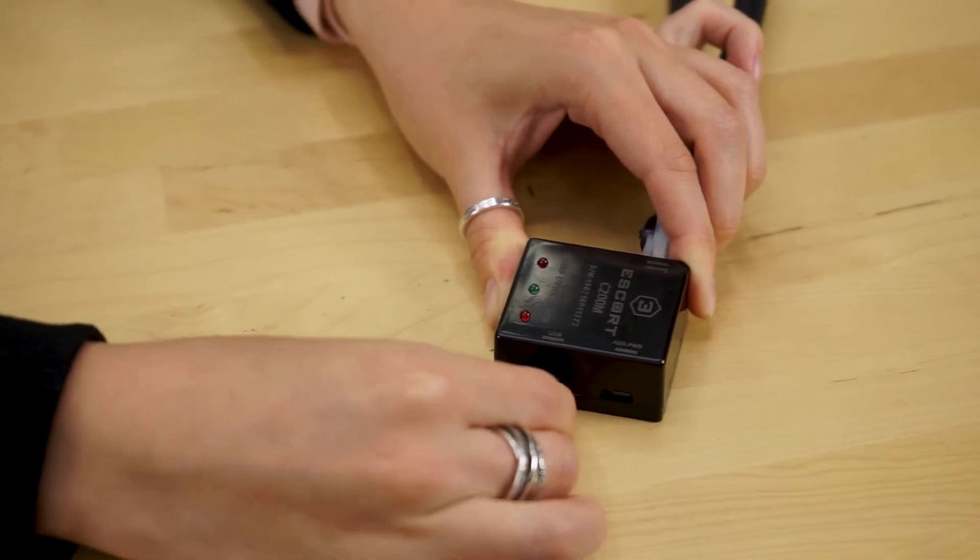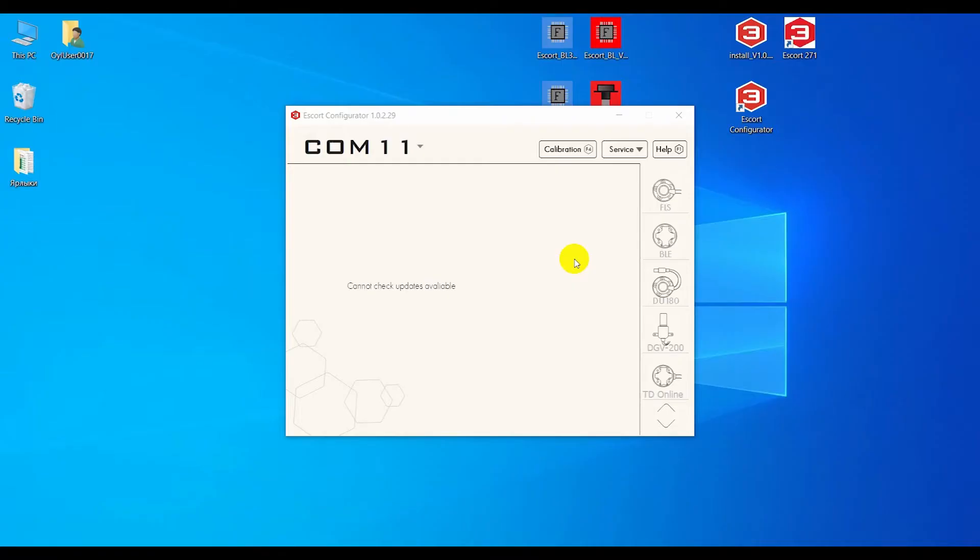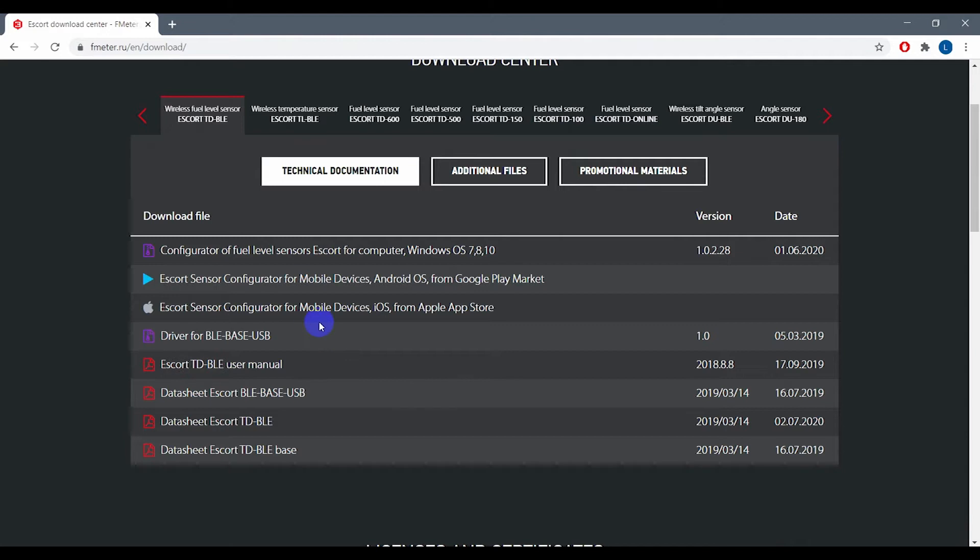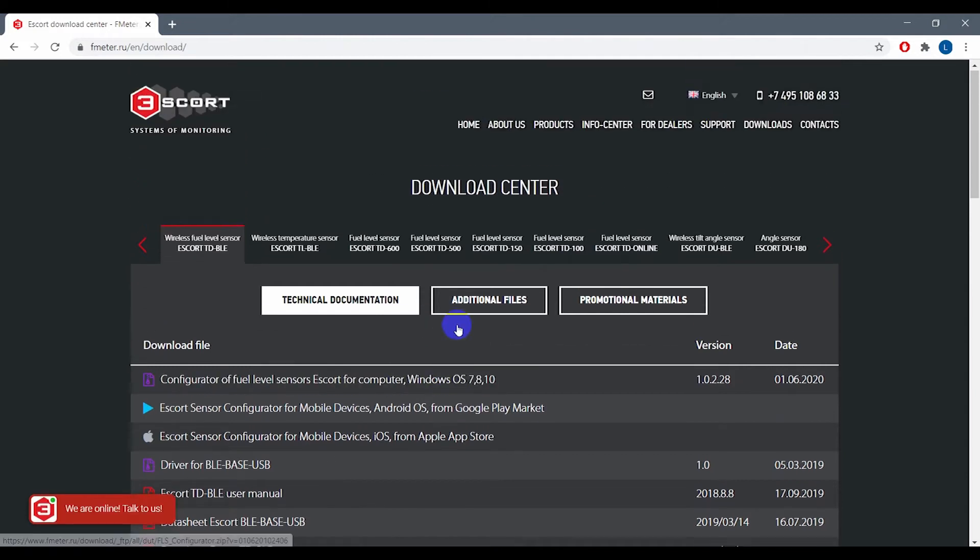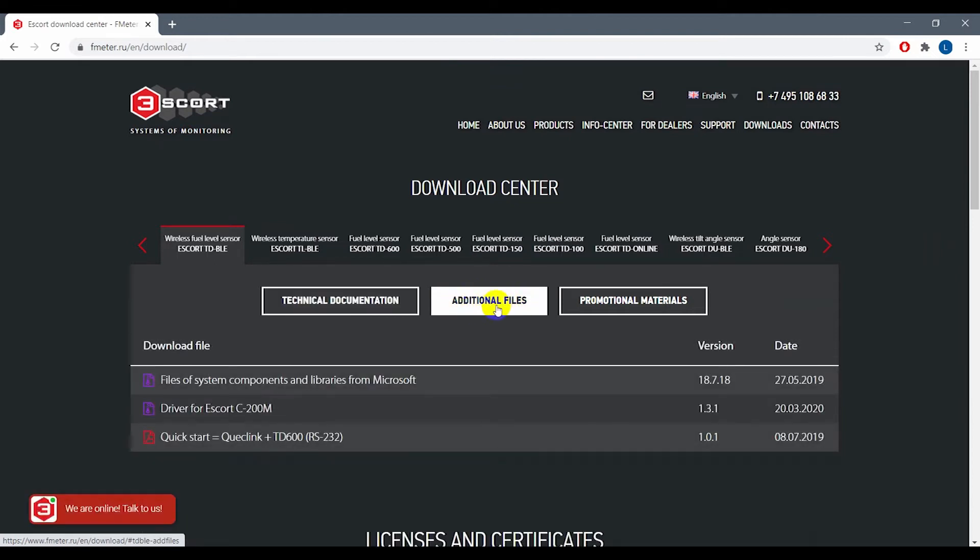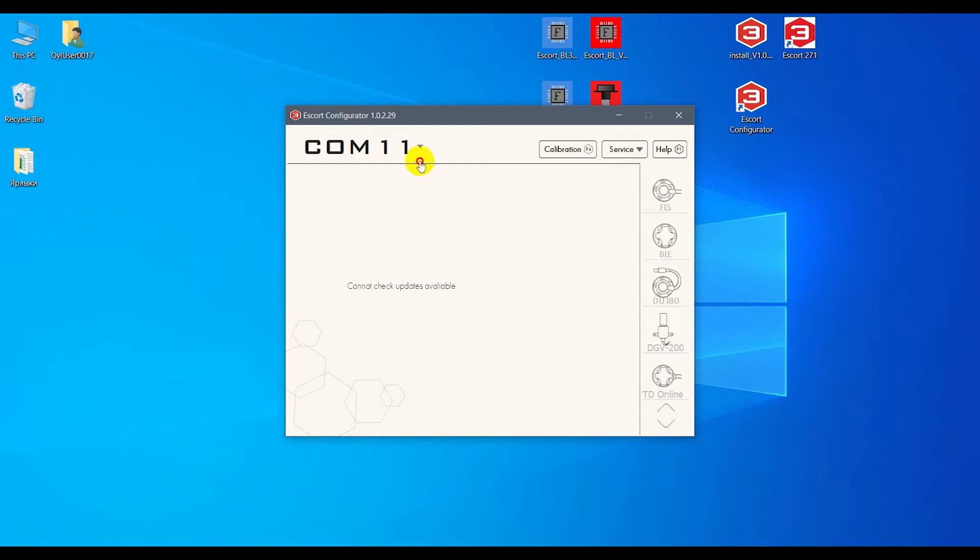To be able to use the C200M converter and configure the sensor, you need to install the drivers. They are currently installed along with the configurator program, and also you will need to install the Windows libraries that can be downloaded from our website's downloads section, in particular the additional files tab.